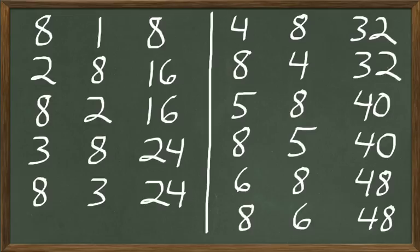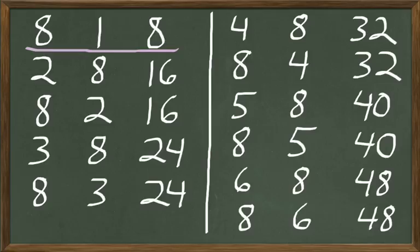Now as we look at these, the first number is the multiplier — that's telling us 8 times something, 2 times something. The second number is the number that we're multiplying that many times. In the first one, 8 times 1 are 8 — you got 1 marble multiplied 8 times, so that's 8 marbles altogether. If you had 2 groups of marbles and they each had 8 marbles in the group, you're multiplying 8 two times — that's 2 times 8 or 16.